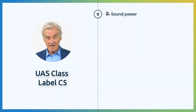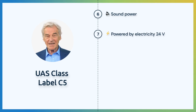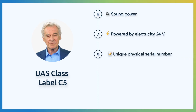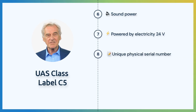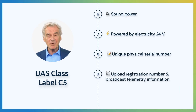It is not allowed for the UA to exceed sound levels detailed in part 30. The UAS needs to be powered by electricity and has a maximum nominal voltage of 24 volts. The UA shall display a unique physical serial number compliant with CTA 2063. The pilot must be able to upload the operator registration number and broadcast telemetry information.